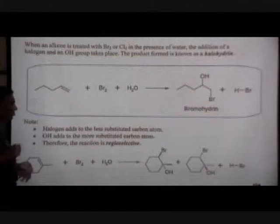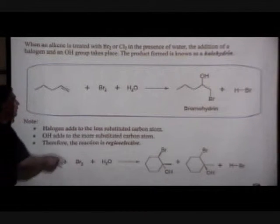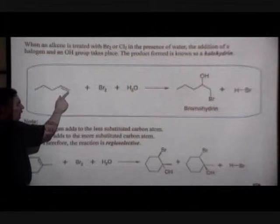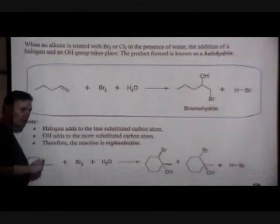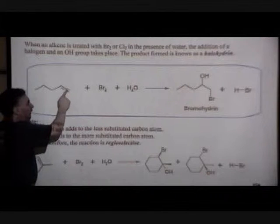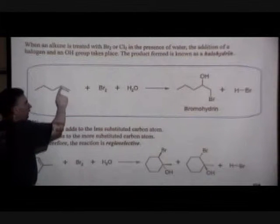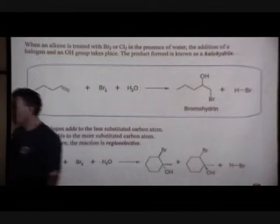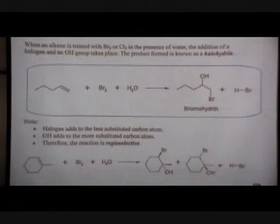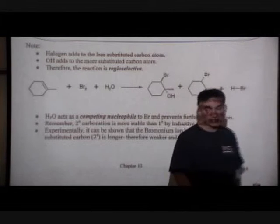Again, the addition is very specific in all alkenes, regiospecific. The side which has more hydrogen in the double bond, that's the side that gets the halogen. The halogen takes the place of hydrogen addition. The other side has more hydrogen, that's the side that gets the bromine. The side with less hydrogen is the side which gets the alcohol group, the hydroxyl addition.